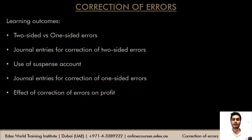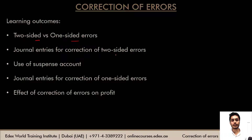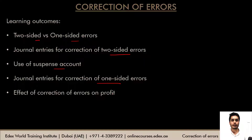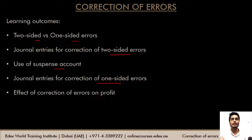So what are we going to study today? First, we understand the difference between two-sided and one-sided errors. We will see examples using journal entries to rectify two-sided errors, then we understand the use of the suspense account and journal entries for correcting one-sided errors. After correction of errors, the net profit of the business is bound to change, so we will also understand how correction of errors affects net profit.